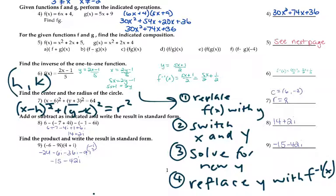Number 8, you have to distribute the negative and then combine like terms. Standard form has the imaginary part i coming last. Number 9, you had to FOIL it out, change your i squared to negative 1, and again write it in standard form. The answer would be negative 15 minus 42i.